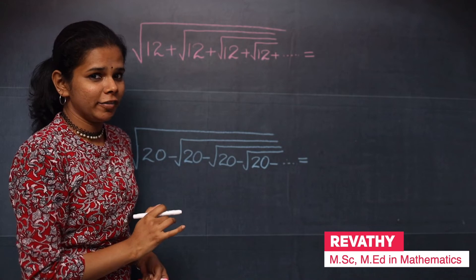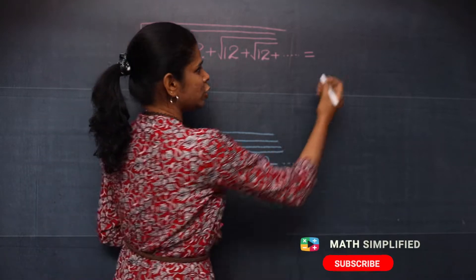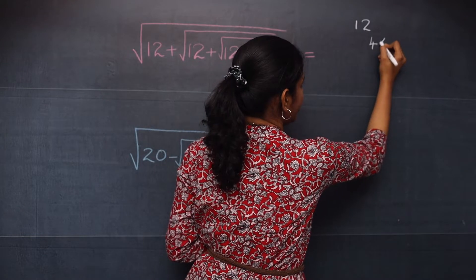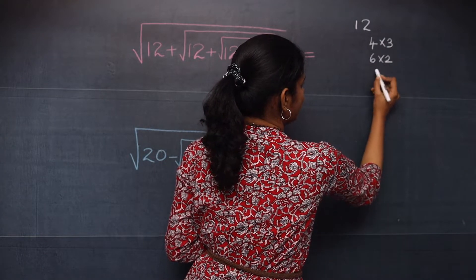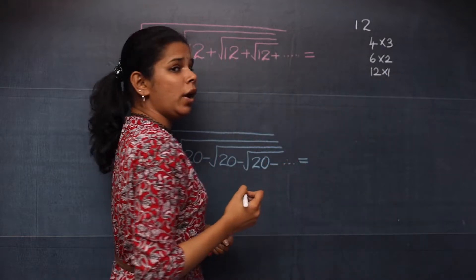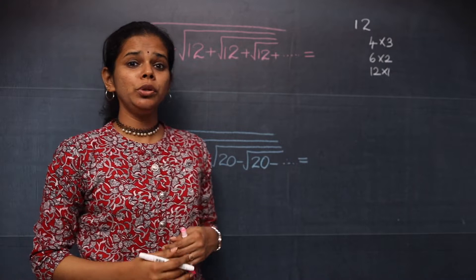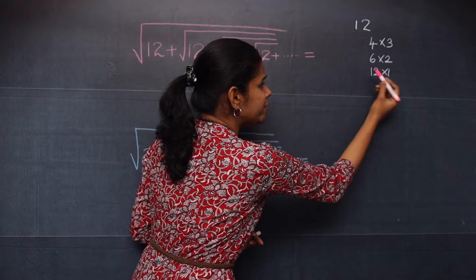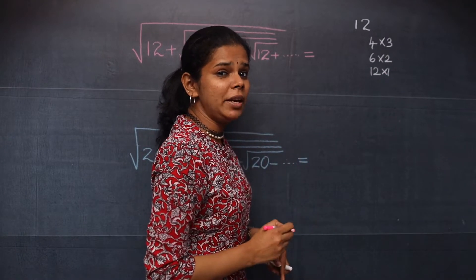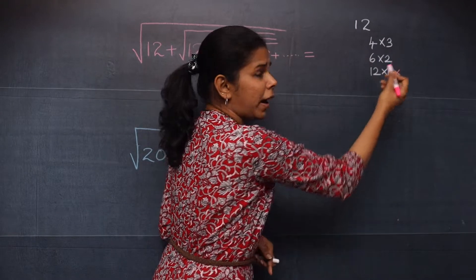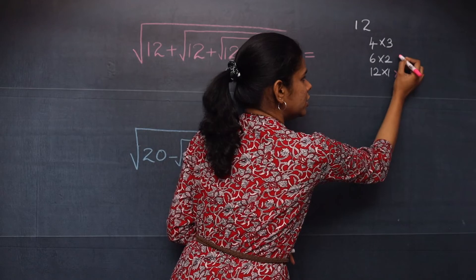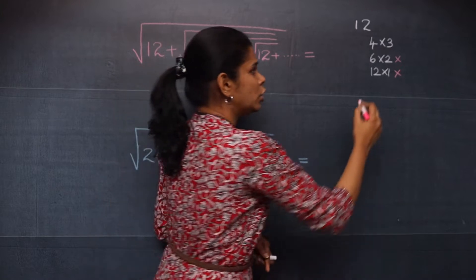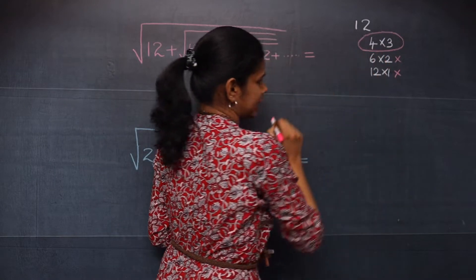In this first question you have the number 12. The first step is to take the factors of 12. To get 12 you can do 4×3, 6×2, or 12×1. From these pairs of factors, you should choose the pair whose difference is 1. So 12−1=11, not 1, so that can't be taken. 6−2=4, not 1, so that can't be taken either. But 4−3=1, so you choose this pair of factors.